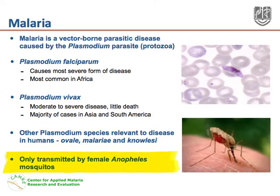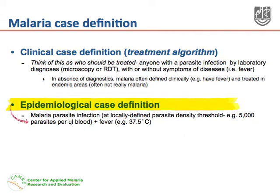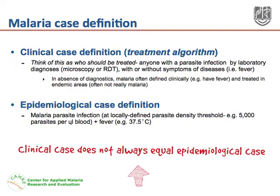The parasite is only transmitted by the female Anopheles mosquito. The clinical case definition of malaria is anyone with a parasite infection by laboratory diagnosis with or without symptoms of disease — we can think of this as anyone who should be treated. The epidemiological case definition of malaria is anyone with a malaria parasite infection plus fever. It is important to remember that clinical cases do not always equal epidemiological cases.